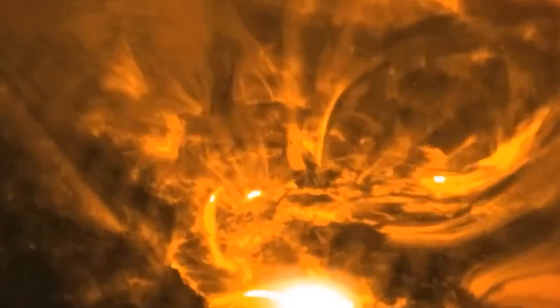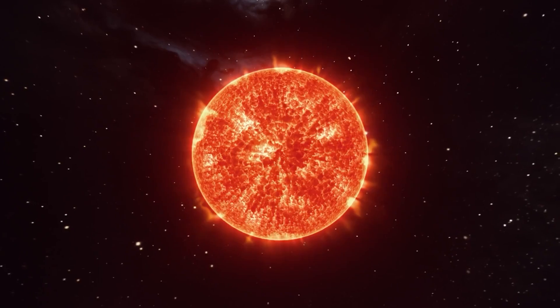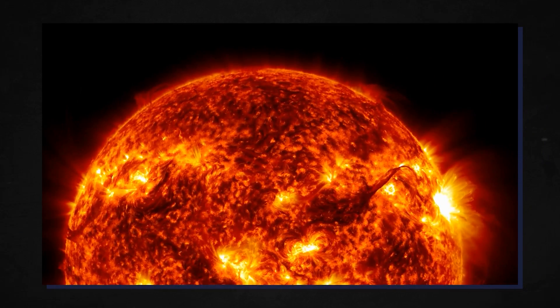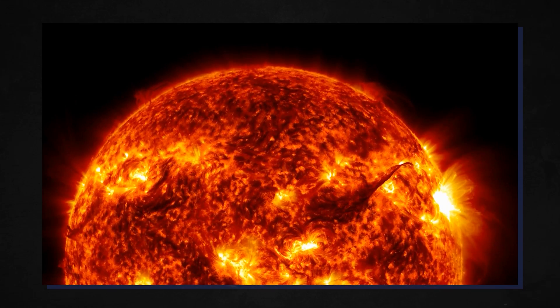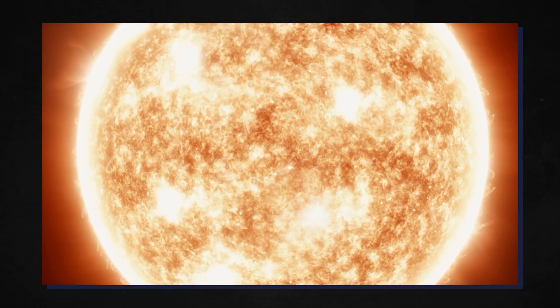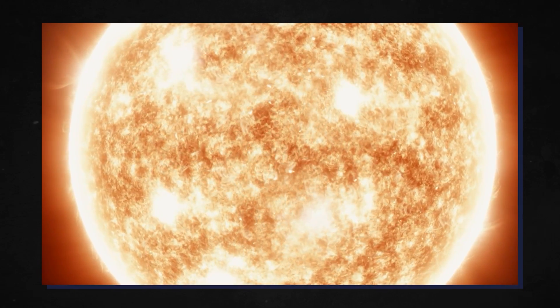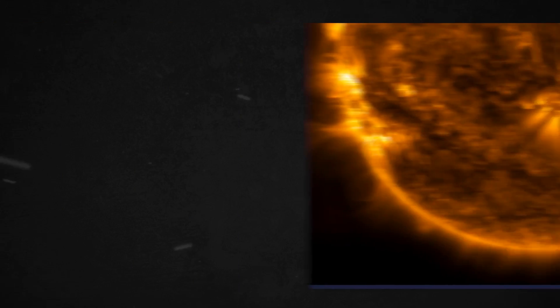Now, stars are not static. They change and evolve. They go through different stages in their development, and their colors change accordingly. The youngest and hottest stars appear blue, while the older and cooler ones appear red. It's like stars have their fashion show, with colors representing their age and stage of life.